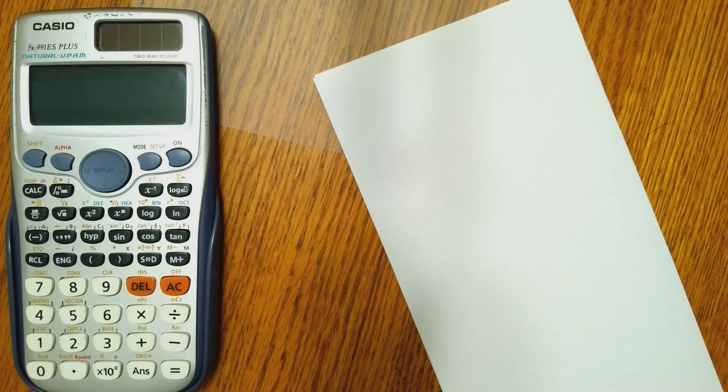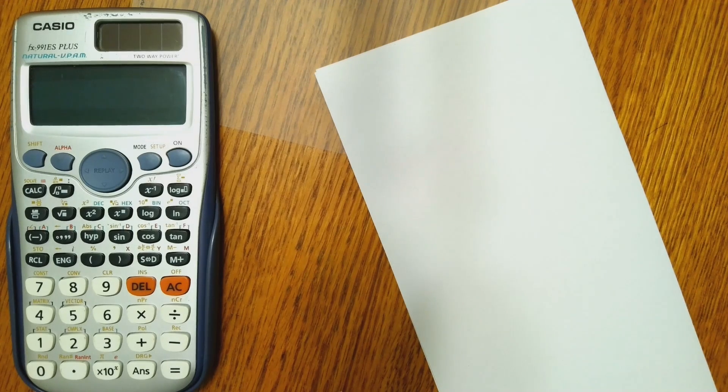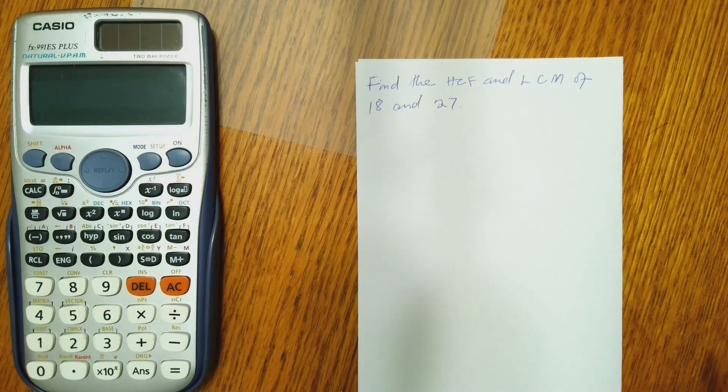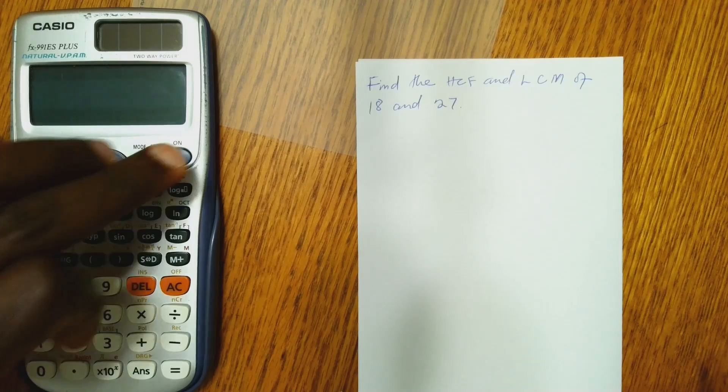In the first question, we are going to find the HCF and LCM of 18 and 27. So this is the first problem. And we'll start first of all by turning on our calculator.